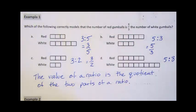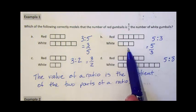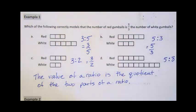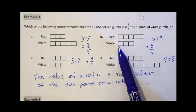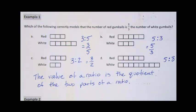So now we can see that part B shows the correct ratio — the number of red gumballs is five-thirds the number of white gumballs. I could take the number of white gumballs, multiply it by five-thirds, and I would get the number of red gumballs. The value of the ratio is going to be a very important part as we talk about ratios.